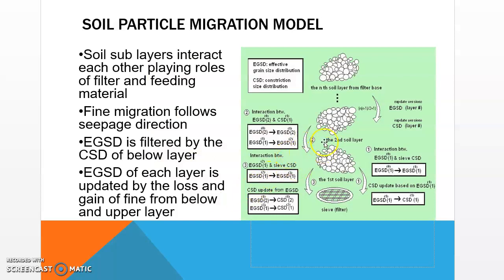The proversity model can handle this kind of chain reaction. Fine particles from the first layer pass through the filter media and change the grain size distribution. Consequently, that change in grain size distribution has an important impact on the constriction size distribution. The changed constriction size distribution also influences the upper soil's grain size distribution, because fine particles pass through the first layer and cause a constriction size change — so it's a chain reaction that moves toward the upstream area.